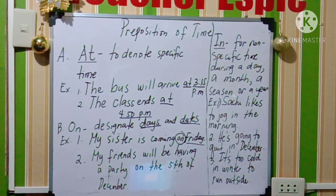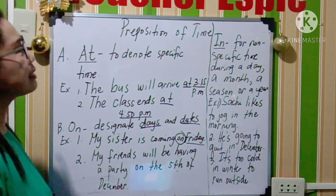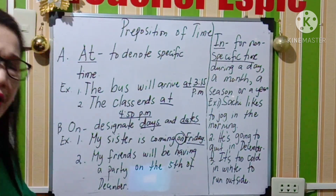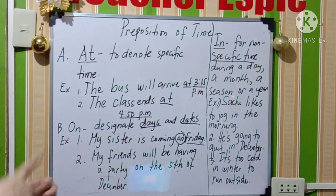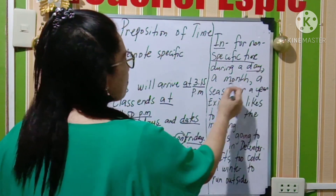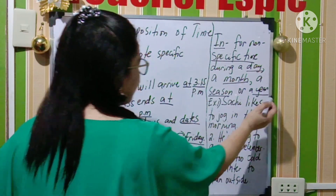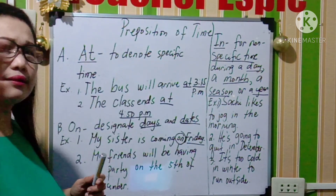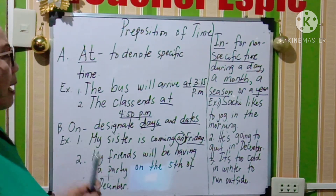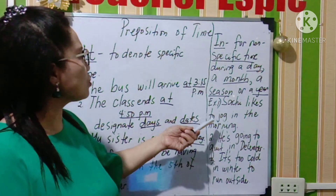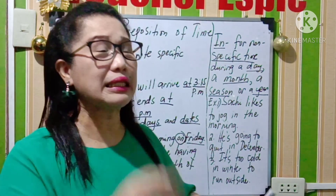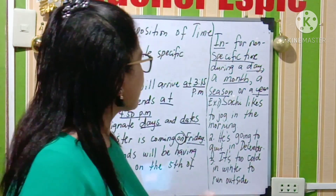Paano naman po gagamitin ang in sa preposition of time? In meaning for non-specific time. Ibig sabihin, wala po siyang exact kung anong araw, kung anong day. Basta month na po yun. During a day, a month, a season, or a year. So when we are talking about a day, ibig sabihin you can use Monday until Sunday. So I have here on the board an example: Sachi likes to jog in the morning. Day — Monday, morning, and afternoon. So yun po yung tinatawag nating non-specific time.